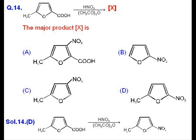Question number 14: a furan derivative is given and subjected to nitration in the presence of acetic anhydride. NO2+ will be the electrophile which gives a reaction at position number 2 along with decarboxylation reaction. So it is an ipso-substitution reaction in furan.